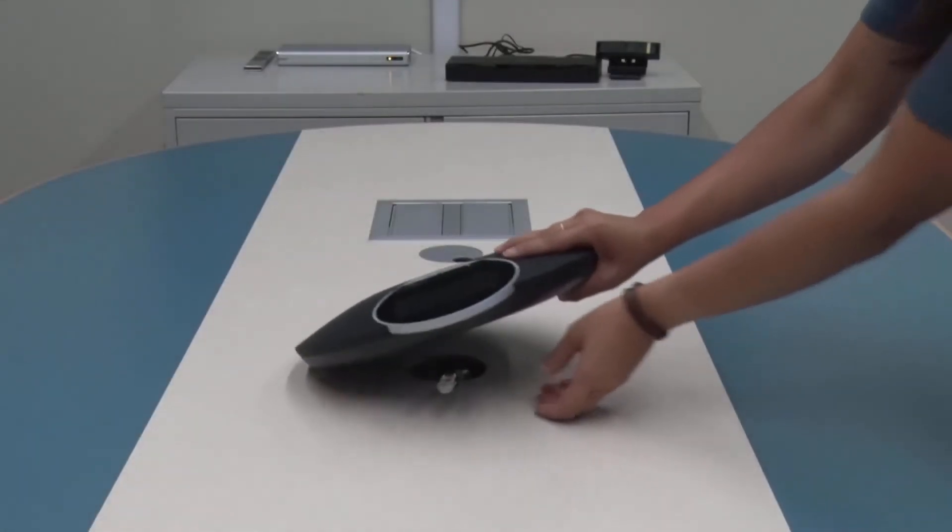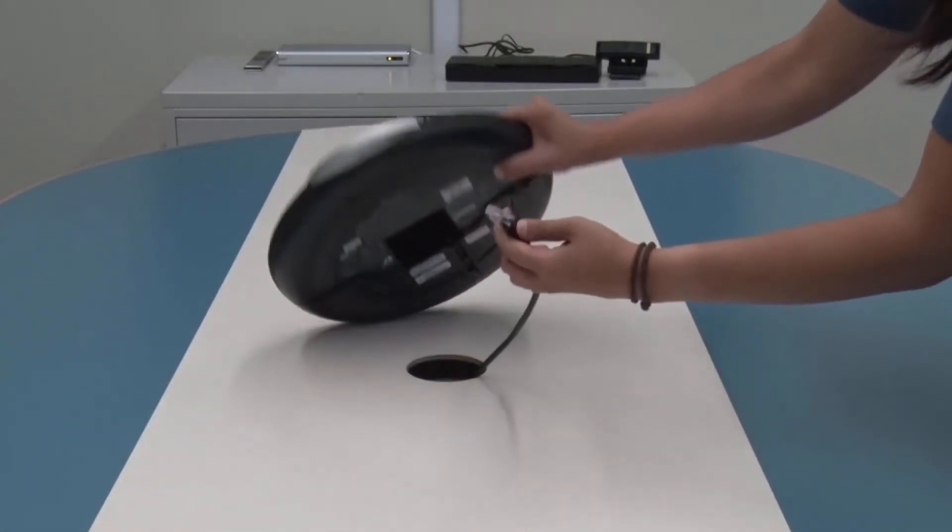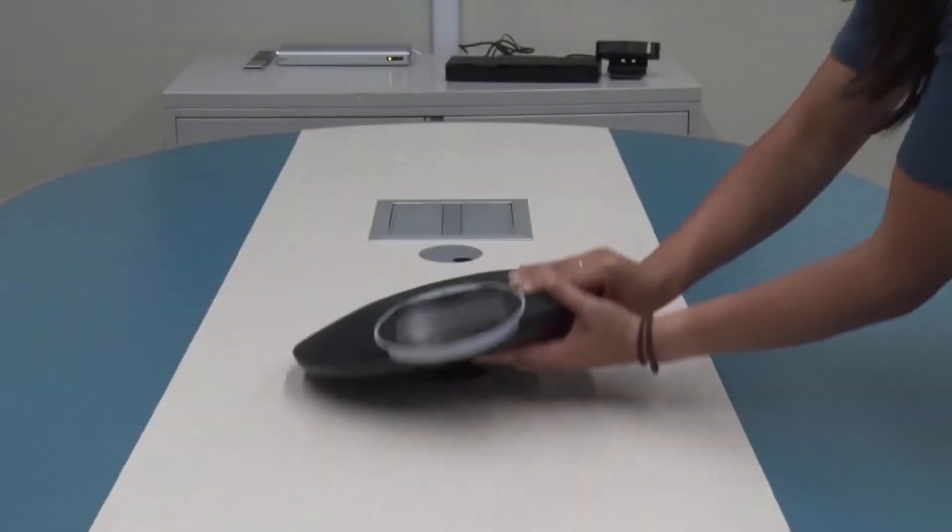Now we're going to move on to the Dolby conference phone. Using the provided Ethernet cable, connect it to the back of the phone.